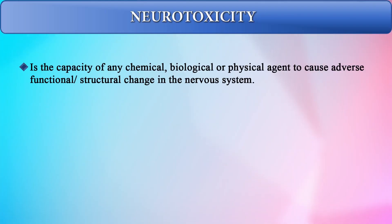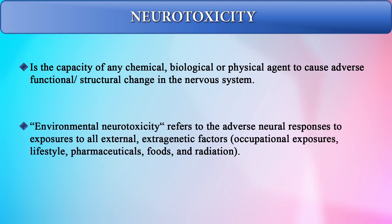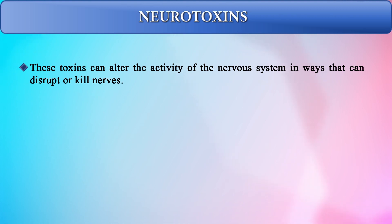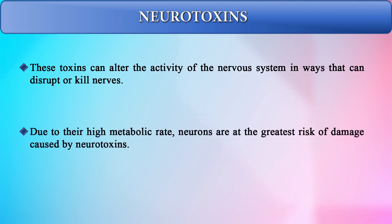Neurotoxicity is the capacity of any chemical, biological, or physical agent to cause adverse functional and structural change in the nervous system. Environmental neurotoxicity refers to the adverse neural responses to exposures to all external extra-genetic factors, such as occupational exposures, lifestyles, pharmaceuticals, food, and even radiation. Neurotoxins can alter the activity of the nervous system in ways that disrupt or kill nerves. Due to their high metabolic rate, neurons are at the greatest risk of damage caused by neurotoxins. Depending on a neurotoxin's chemical profile, it will cause damage to certain parts or particular cellular elements of the nervous system.